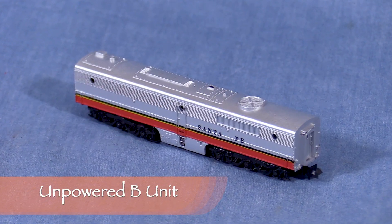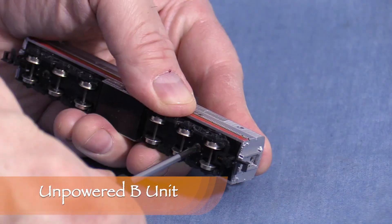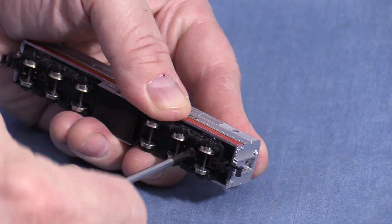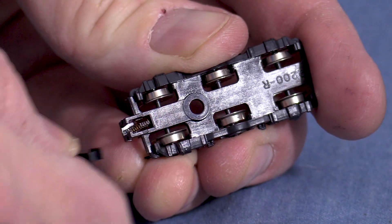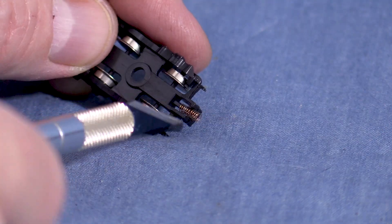It's not necessary to completely disassemble the unpowered B unit. Each truck is held on with a single screw. Twist the coupler 90 degrees to remove it. The spring may need to be coaxed out.